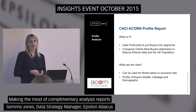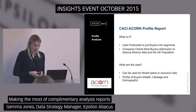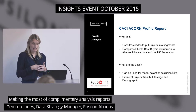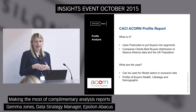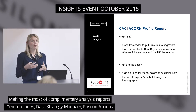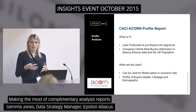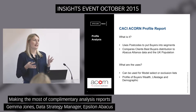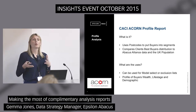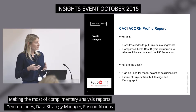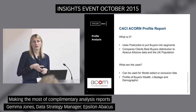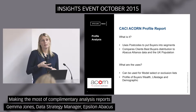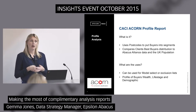Another profile report we can run is the CACI ACORN report. ACORN, as I'm sure a lot of you know, is a consumer classification that segments the UK population. By analysing demographic data, social factors, and population, it provides information and understanding on different types of people. Depending on where you live in the UK can dictate what your likes are and what sort of products you're likely to buy. We use this for model selections or exclusion lists, and we find it particularly useful for gardening catalogues because we can target rural areas where people have large gardens and spend a lot of time and money on their gardens.